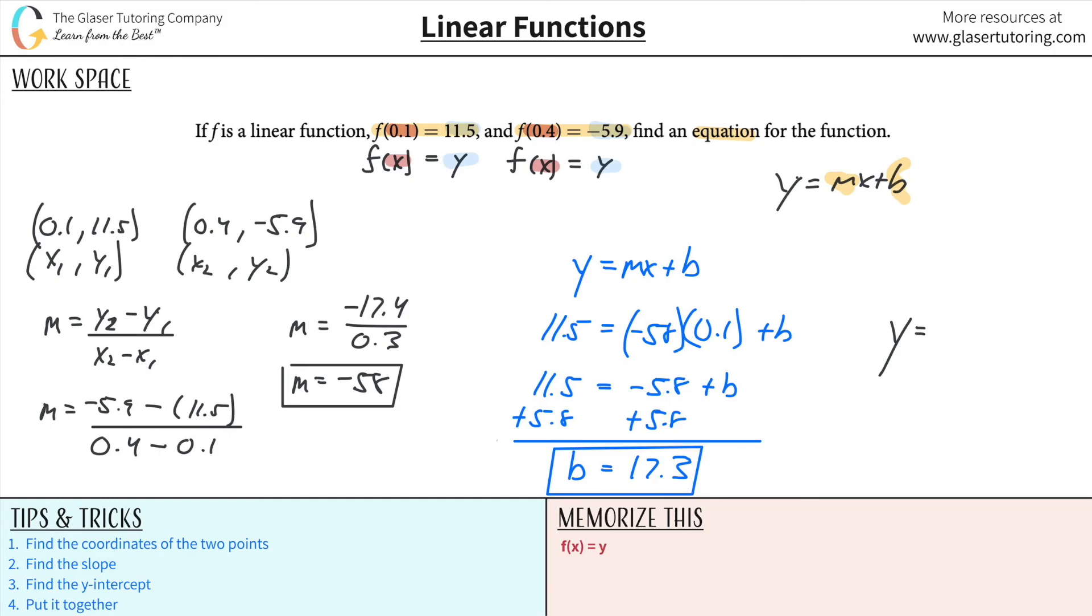So now all I need to do is take these pieces and put them together. So y will equal the slope value of negative 58x plus 17.3. And if you need it, you can convert that to a fraction, right? The 17.3, we can do like just the math function. We can go 1 and that would be about 173 over 10, but don't worry about it.